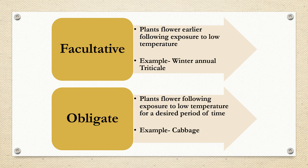In obligate vernalization, plants flower following exposure to low temperature for a desired period of time. This means the plant will flower, but it needs a considerable period of time at chilling or cold temperature. This is seen in cabbage.